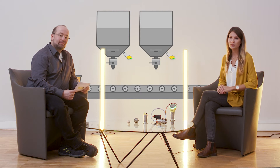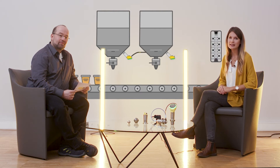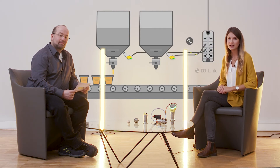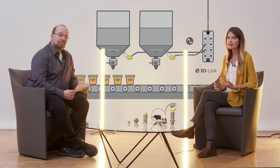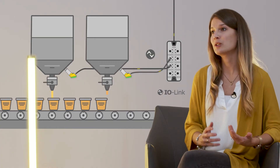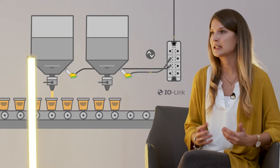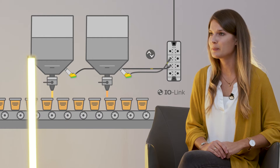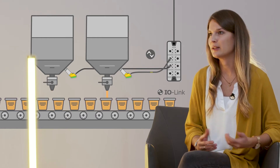Nathalie, what is IO-Link and what advantages does it offer the user? IO-Link is a standard communication protocol for digital signal transmission. Originally it comes from factory automation and has established there as a standard because devices can be very easily and cost-effectively integrated into a system, but also replaced if necessary.